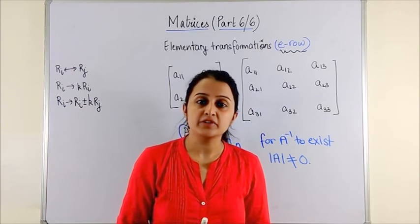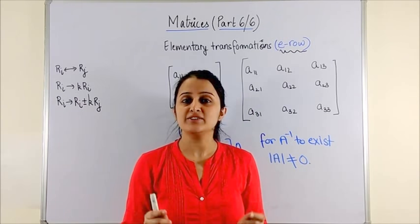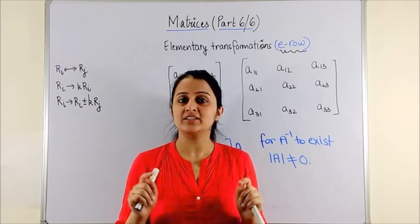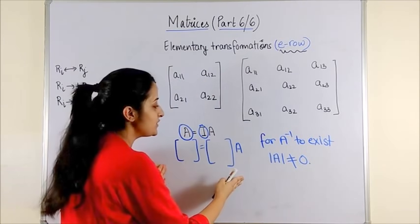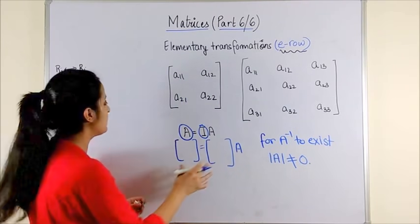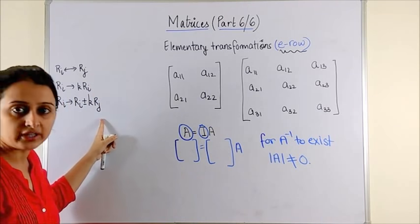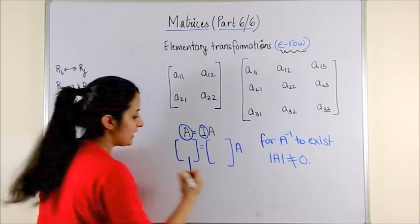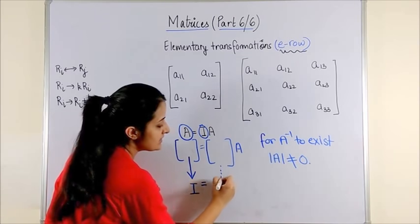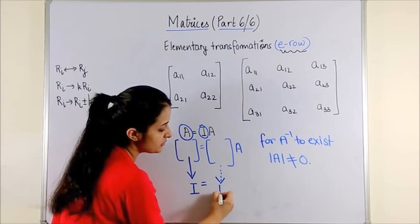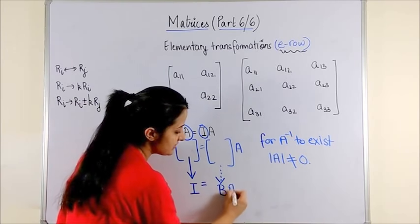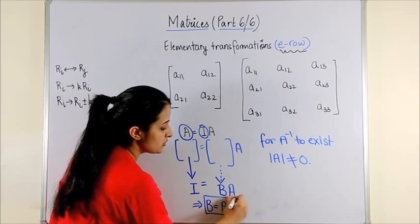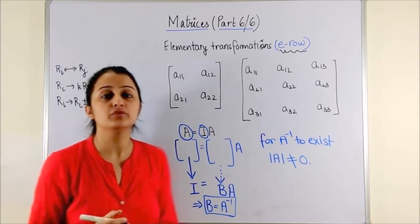What is the determinant of a square matrix and how is it calculated? Please refer to the short video on determinants linked in the description box below. Once we have this format, next we apply valid row transformations to convert the first matrix into the unit matrix I. When we do that, the same operations transform I into a new matrix B, and A is written as it is. This implies B equals A inverse.